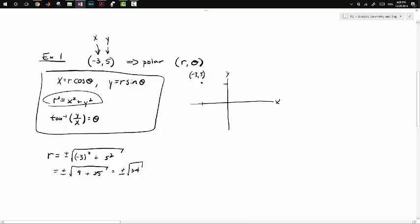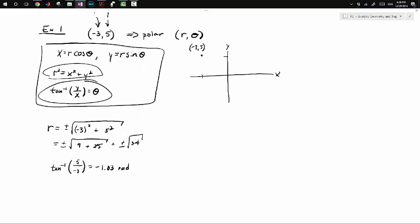We can find our theta angle given this formula here. Tangent inverse of Y over X, so Y will be 5 and X will be -3. This gives us -1.03 radians. These angles are generally expressed in radians, though you could do it in degrees.